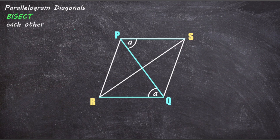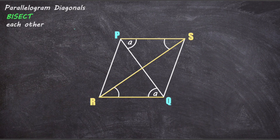Now instead of focusing on diagonal PQ, we'll focus on diagonal RS while still focusing on the top and bottom parallel lines — I'll highlight that so it stands out. Again the diagonal intersects the two parallel lines; this time it's diagonal RS. This creates another Z shape, this time facing the opposite way, but you should still recognize that in the corners of the Z shape we have alternate angles which are equivalent. So let's mark those angles and give them the value B.